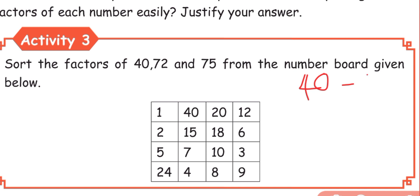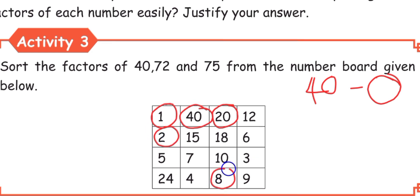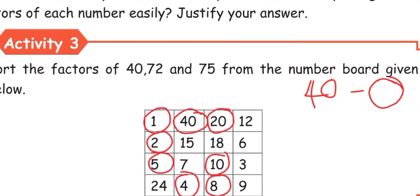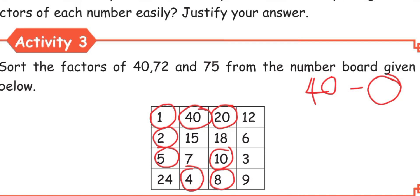For 40, we will circle the factors: 1, 40's are 40. 2, 20's are 40. 8, 5's are 40. 10, 4's are 40. These are the factors of 40.